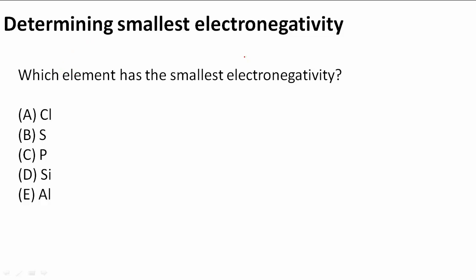Determining smallest electronegativity. In this problem, we need to find which element has the smallest electronegativity. We have five elements here: Cl, S, P, Si, and Al.